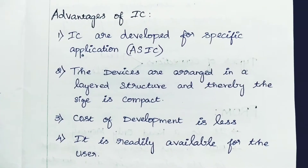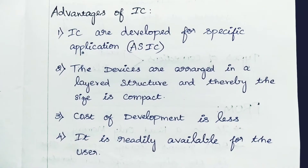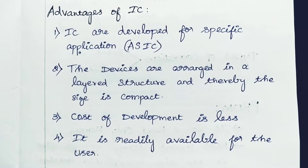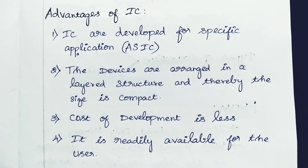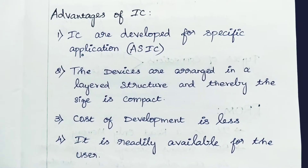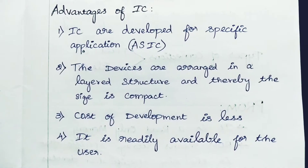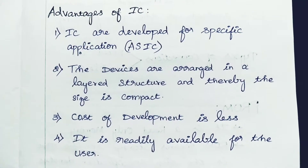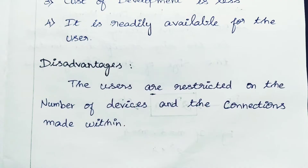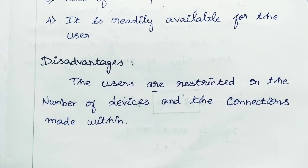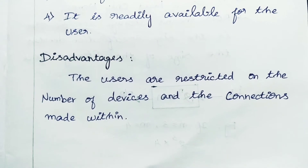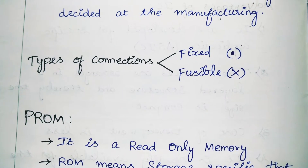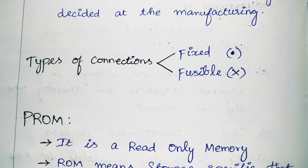The advantages are that it is developed for a specific application, the devices are arranged in a layered structure so the size is compact, the cost of development is less, and it is readily available for the user. The disadvantage is that users are restricted on the number of devices and the connections. There are two types of connections: fixed and fusible.